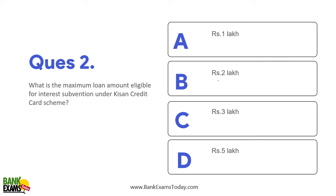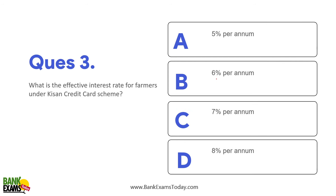What is the maximum loan amount eligible for interest subvention under the Kisan Credit Card? It is 3 lakh rupees — please remember that. And what is the effective rate of interest for farmers under the Kisan Credit Card? It is 7%, which everyone should already be aware of.